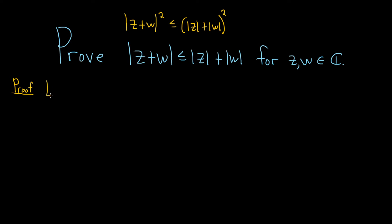Proof. We'll start by letting z and w be complex numbers — elements of the set of complex numbers. We're going to use various properties in this problem.